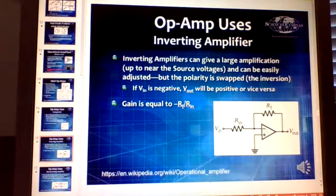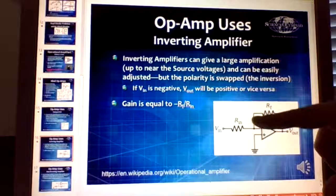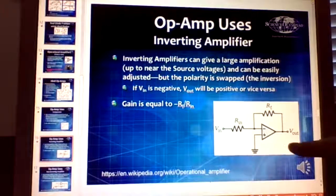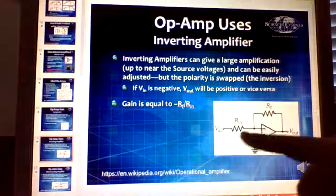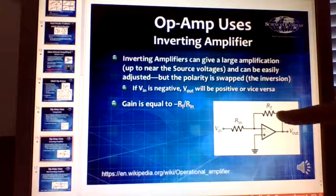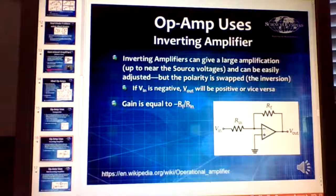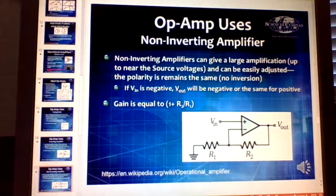The most common op amp configuration is the inverting amplifier, which has an input resistance and a feedback resistor. The gain equals minus RF divided by RN. So if you put a one-megaohm resistor and a one-ohm resistor, you get a minus one million gain — though in real life, minus 10,000 is more achievable.